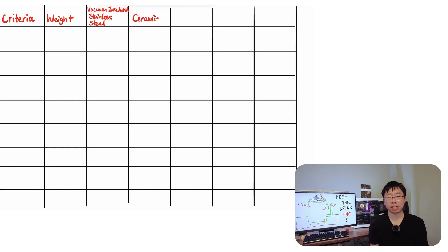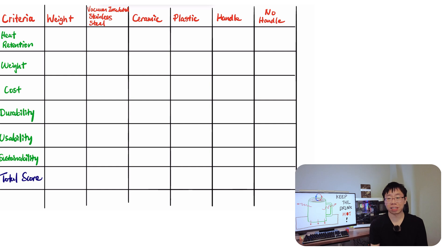Let's say we want to compare a vacuum insulated stainless steel design, a ceramic design, a plastic design, and a design with a handle versus no handle. We evaluate each design based on certain criteria like heat retention, weight, cost, durability, usability, and sustainability, scoring them to make the best choice.